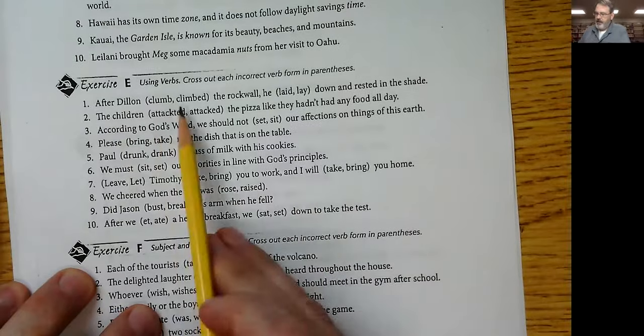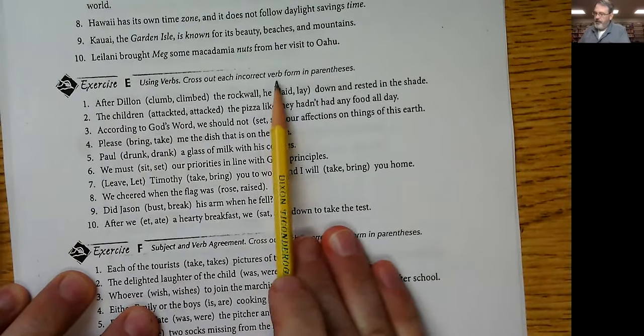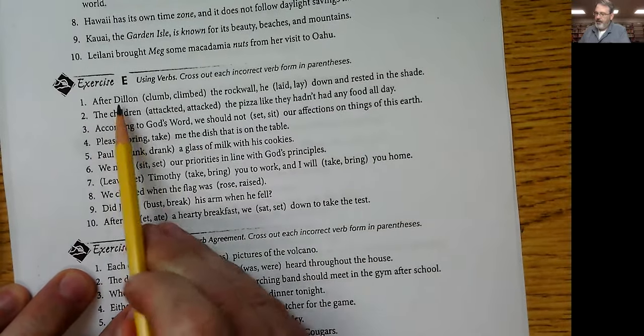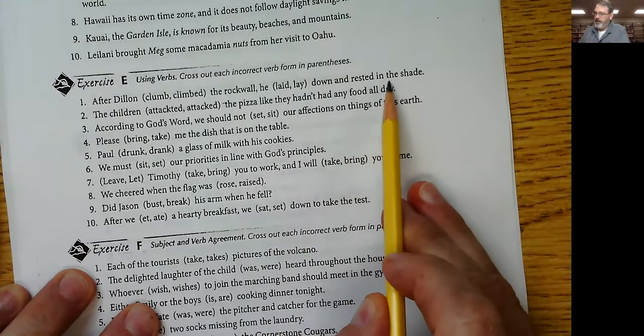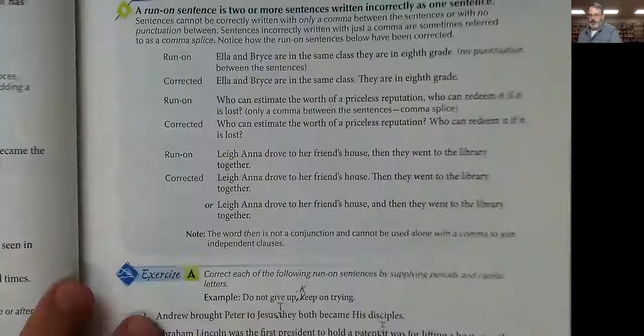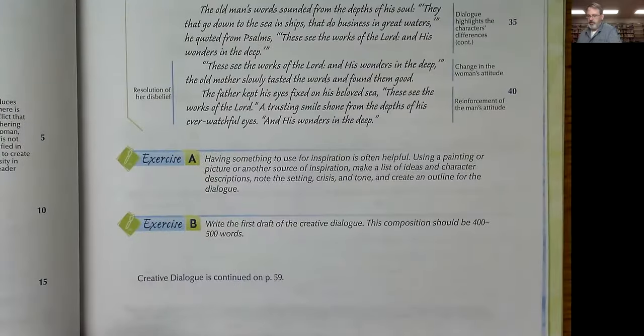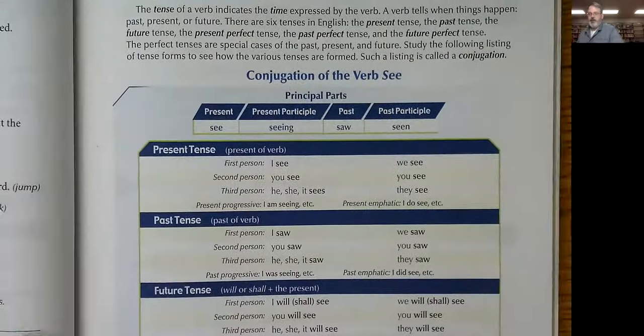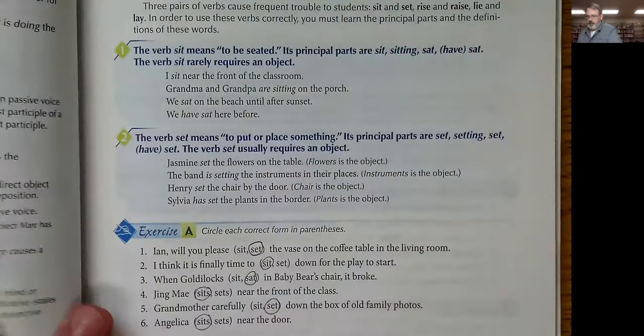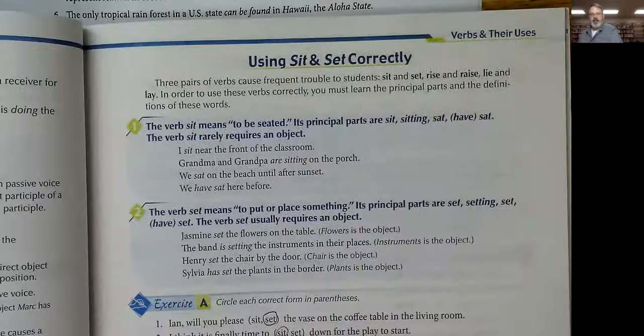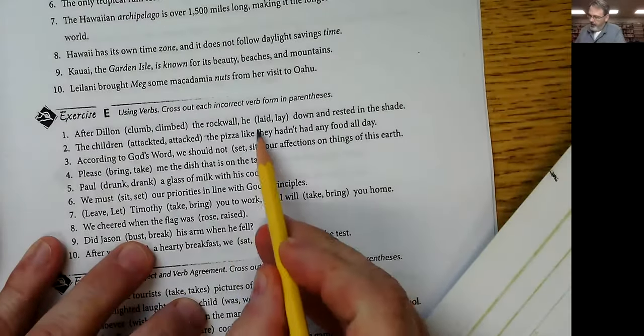Exercise E — using verbs. Cross out each incorrect verb form in parentheses. 'After Dylan Clumber climbed the rock wall, he lay or laid down and rested in the shade.' All of these will be in the chapter on verbs — there are some verbs that are often misused. We're looking at lay versus laid. The verb 'lay' means to put or place something; the verb 'lie' means to recline. The principal parts are: lay, laying, laid, have laid.